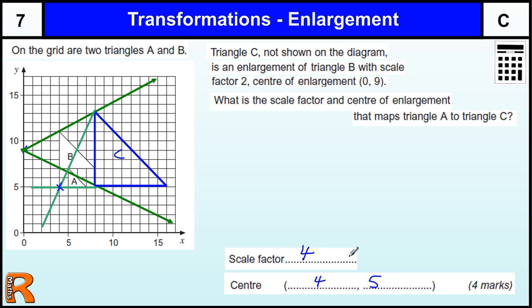So we get two marks for drawing the triangle C, and then one mark for the scale factor of 4, and one mark for the center of enlargement of 4, 5.